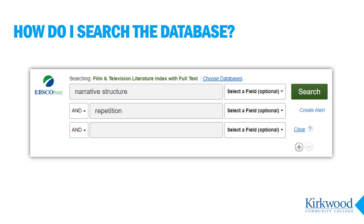In our last search, Run Lola Run and narrative structure might reflect exactly what I want to write about. However, there are many different ways to search for articles to support my argument. For example, I might try searching narrative structure and film, leaving the title of the film out of the search. Or how about narrative structure and repetition? In this way, I might get some discussion on the use of repetition in narrative structure in general, which I can use to discuss Run Lola Run specifically. I'm reaching beyond the obvious and generating fresh ideas.